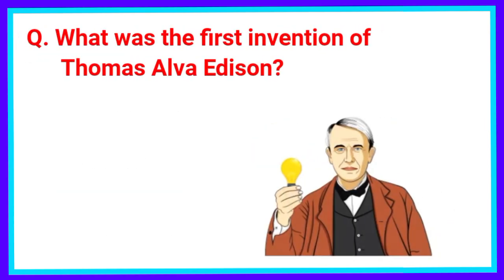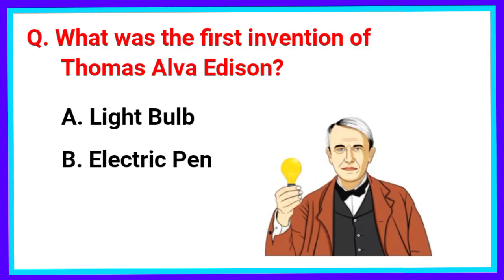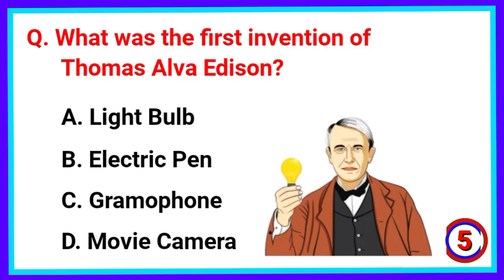What was the first invention of Thomas Alva Edison? The correct answer is Option A. Light bulb.